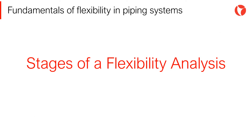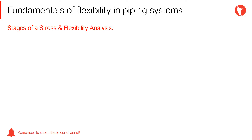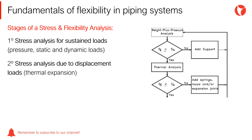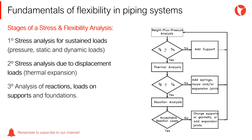The flexibility analysis of a piping system is divided into three stages. First, stress analysis for sustained loads, pressure, static and dynamic loads. Second, stress analysis due to displacement loads and thermal expansion. And third, analysis of reactions and loads onto supports and foundations. All piping systems must meet these conditions.